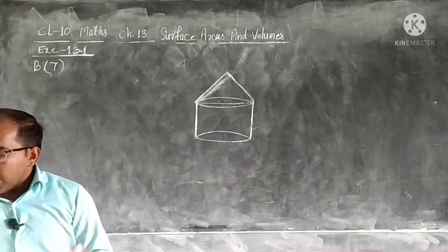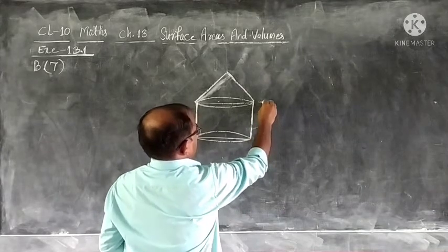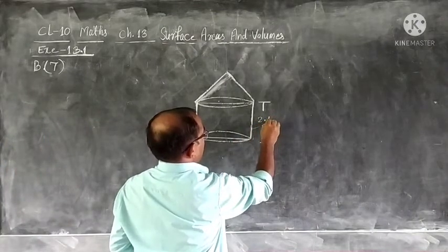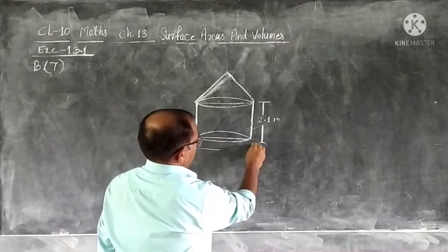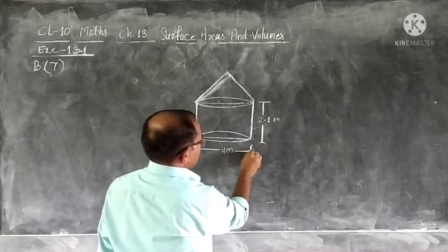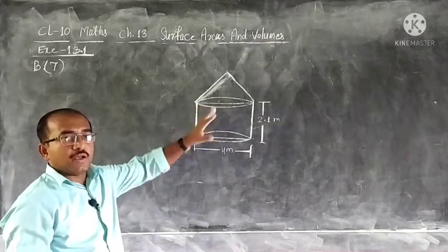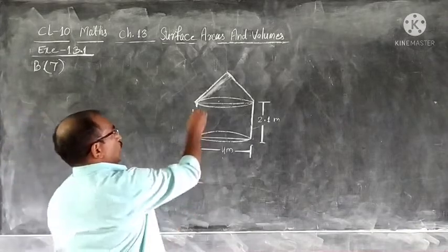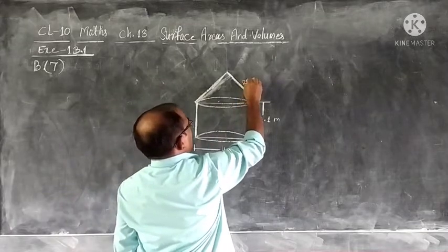The height and diameter of the cylindrical part are 2.1 meters and 4 meters respectively. This is the height of the cylindrical part, and 4 meters is the diameter. Remember, the tent is a combined shape — the bottom part is cylindrical and the top is conical. The height of the conical top is 2.8 meters.